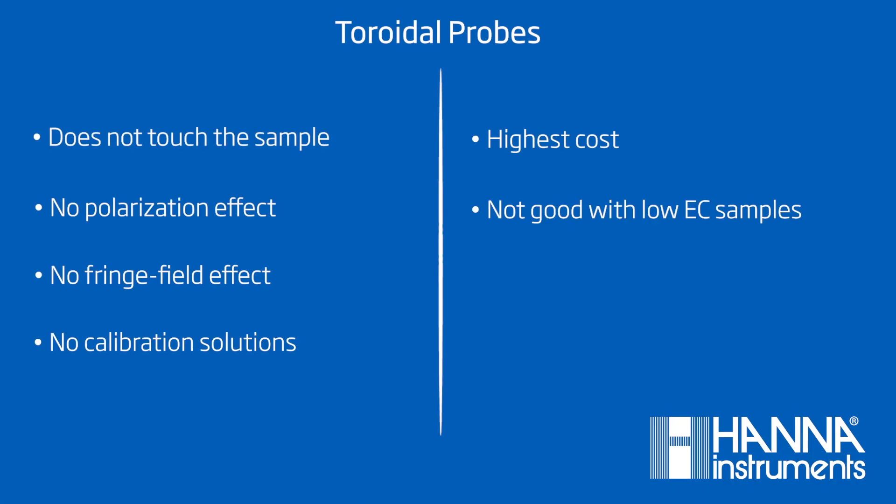Toroidal probes are great because the probe never actually touches the sample, since they are encased in plastic. You don't have to worry about the polarization effect or the fringe field effect. The probe has a very low chance of fouling or getting clogged, and you do not need calibration solutions. They are very accurate in high-range samples, up to 2 Siemens per centimeter. The plastic body is chemically resistant. However, toroidal probes are expensive and not suitable for low-range EC samples. Even though the plastic sheath is chemically resistant, it is not impervious. Be careful not to have organic solvents in your sample, or concentrated chlorine. Select plating baths can also cause issues with incompatibility with the plastic.